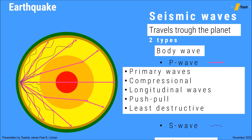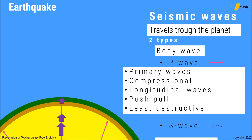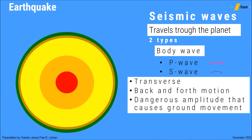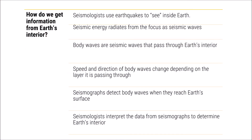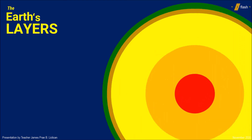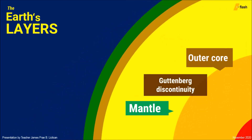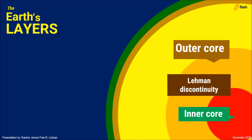P waves, as the fastest wave and as a longitudinal wave, can travel through both solid and liquid, while S waves, aside from traveling slower, are also transverse waves which can only travel through a solid layer. As these waves are detected, they help estimate the internal structure of the Earth. The boundary of the Earth's layers where body waves get bent are called discontinuities. The Mohorovičić discontinuity is the transition between the solid crust and the semi-solid mantle, while the Gutenberg discontinuity is the transition between the semi-solid mantle and the liquid outer core.